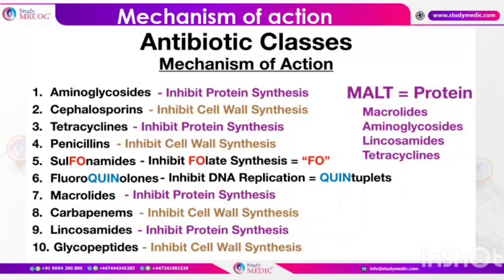Fluoroquinolones, mainly including ciprofloxacin or ofloxacin especially for respiratory symptoms, are contraindicated in pregnancy as they have teratogenic effects on teeth as well as bones. They act by inhibiting DNA replication. Macrolides also act by inhibiting protein synthesis, by binding with the 50S ribosomal subunit; these include erythromycin and azithromycin. Carbapenems, such as imipenem, are very high-level antibiotics that act by inhibiting cell wall synthesis, similar to penicillins and cephalosporins.